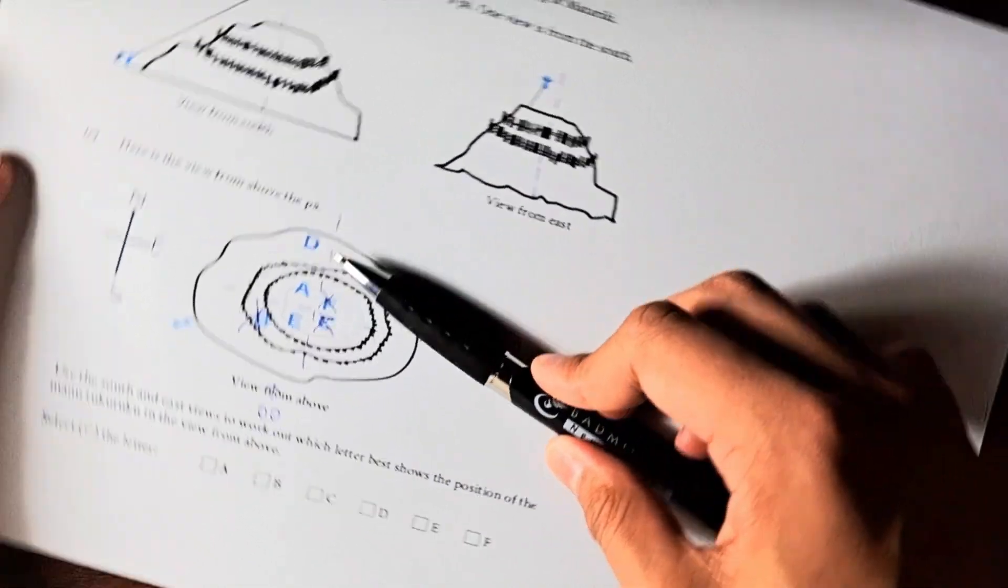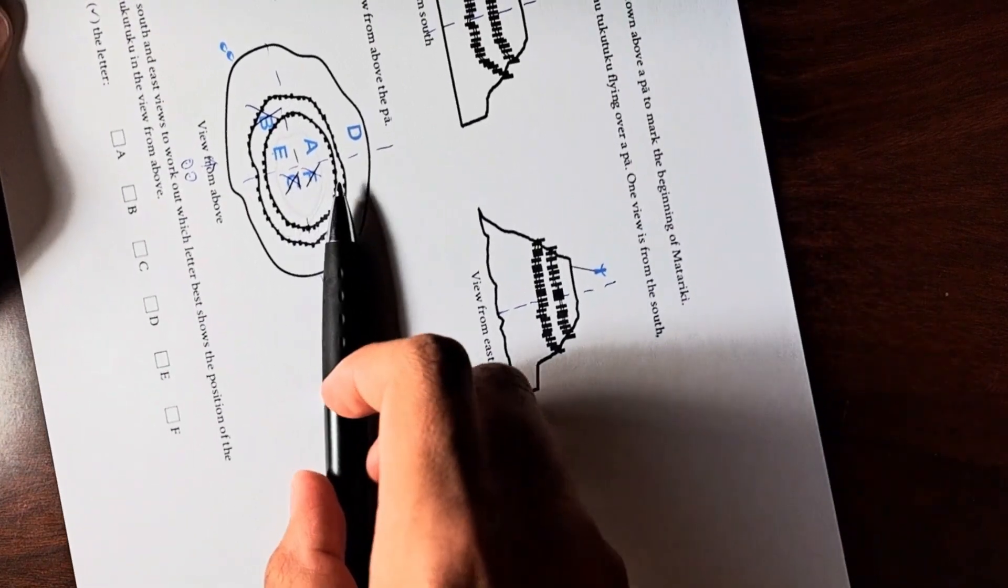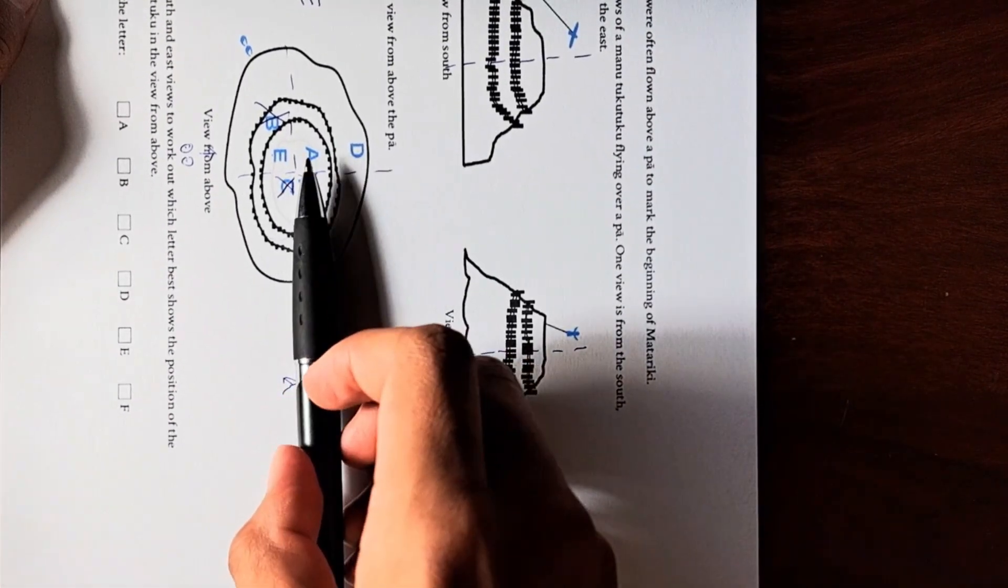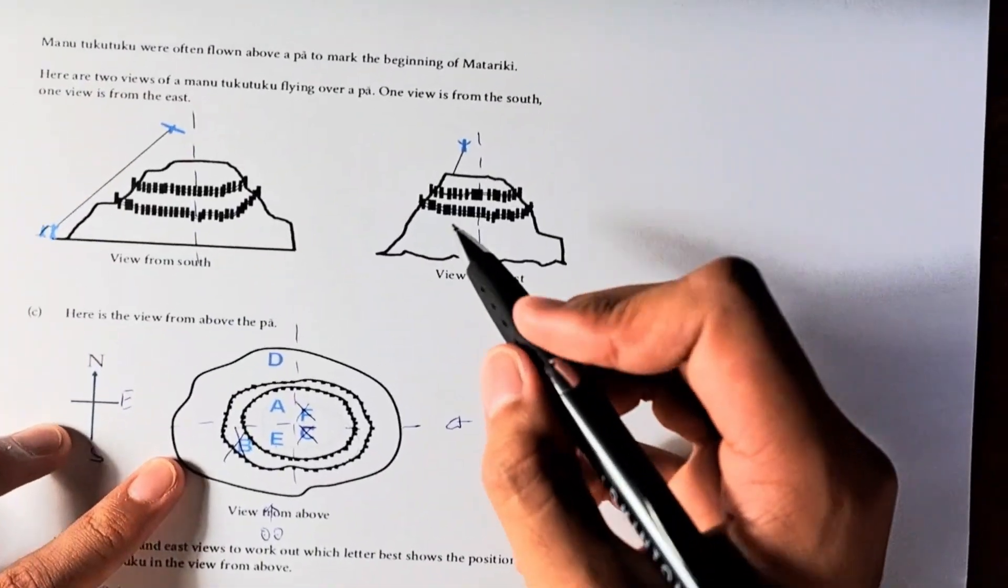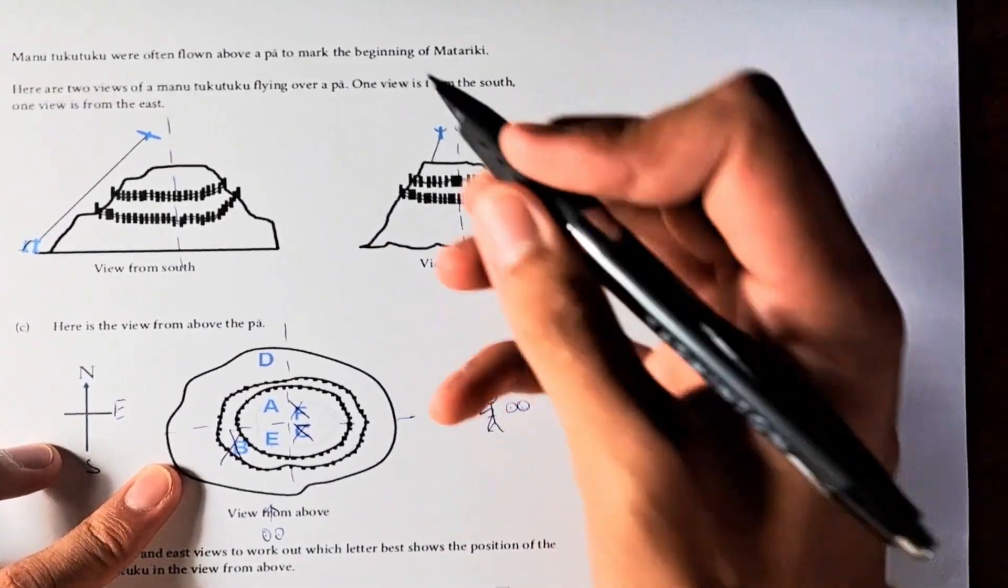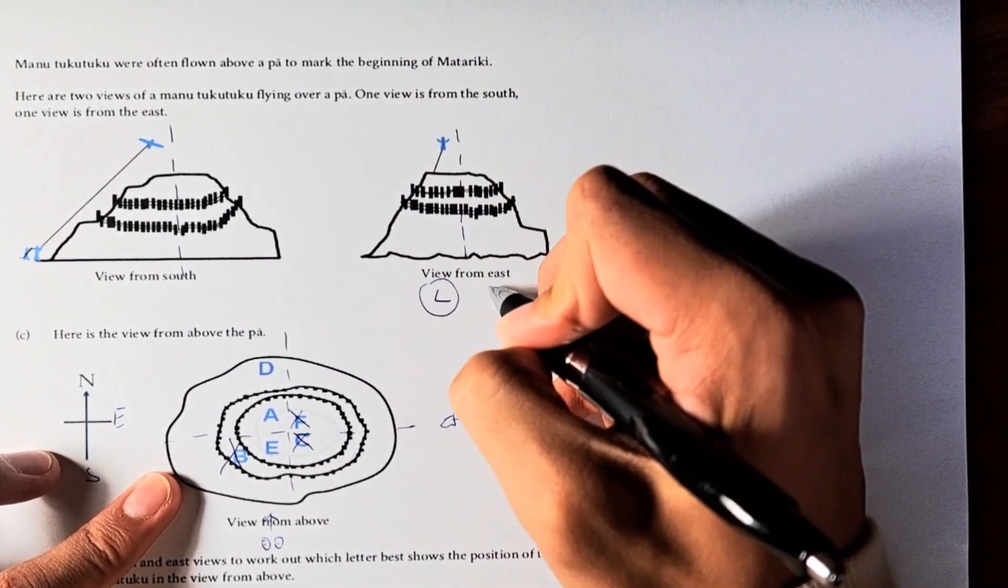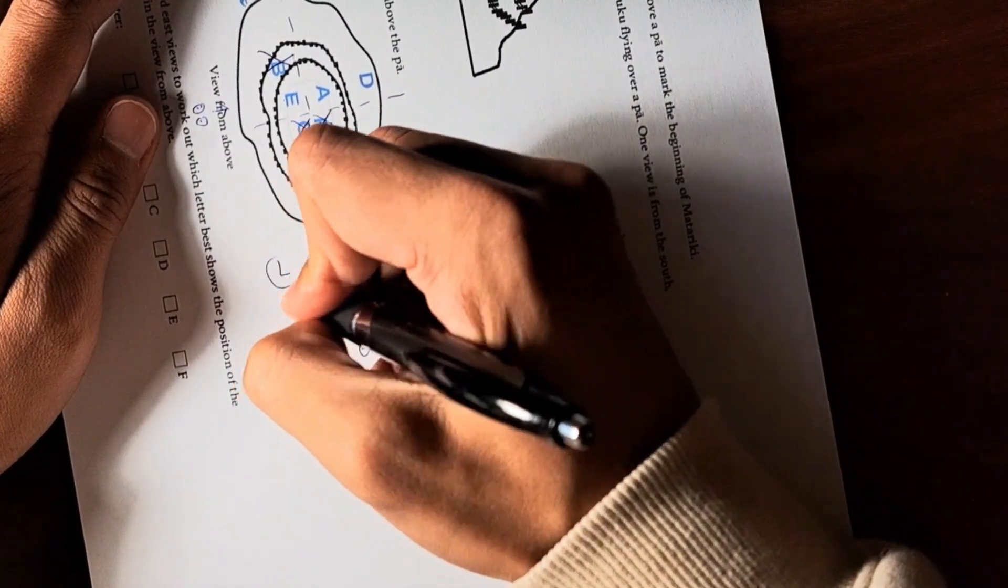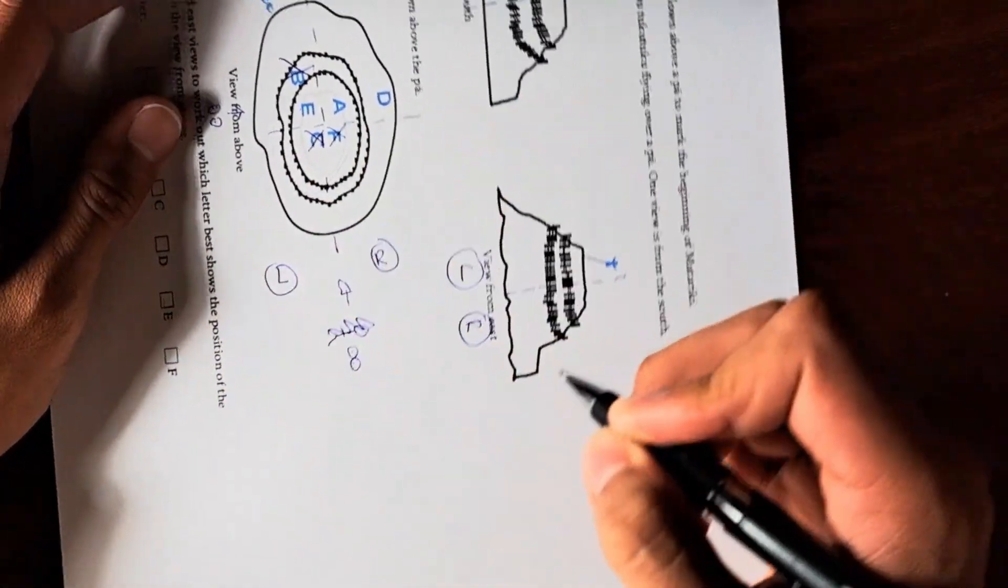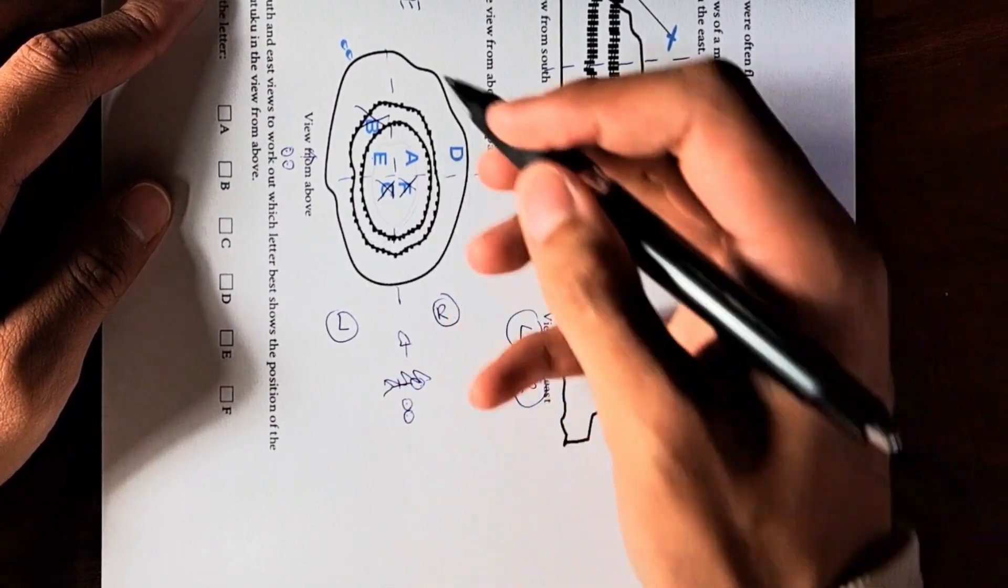We can see that it's left of midline. If we look at it from this angle, it's left of midline. Therefore, it can't be A or D because that would be to the right of midline. It has to be E. Just to reiterate one more time, this is left, this is right. It is left of midline. Therefore, it can't be A or D.